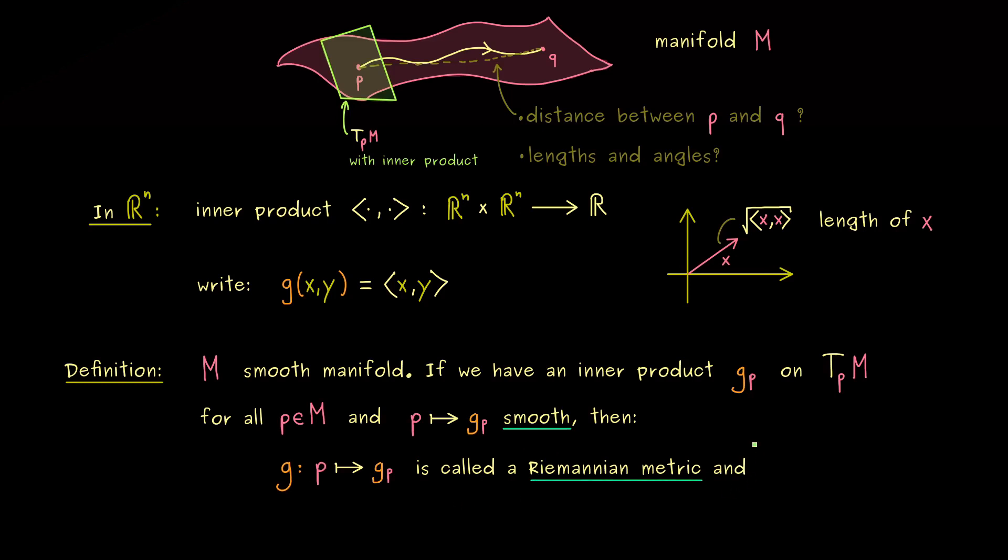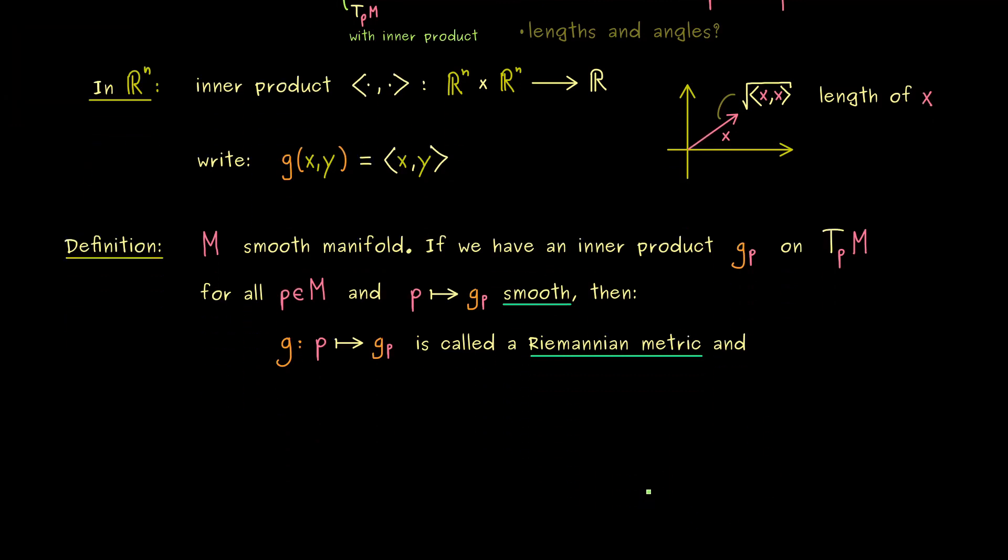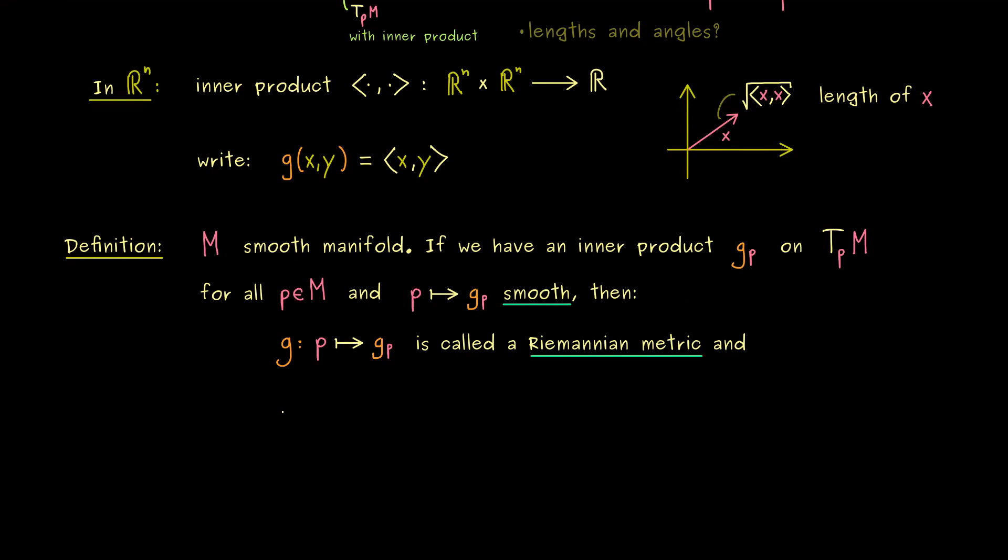And a manifold together with a Riemannian metric is called a Riemannian manifold. And you might know usually we write such a thing as a pair. So we have M and g together and they form a Riemannian manifold. Soon I will show you some examples and then you will see that Riemannian manifolds for submanifolds of R^n are not so complicated at all. However first we should discuss what smooth means in this context here.